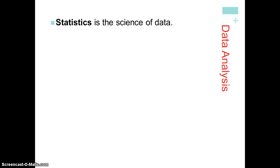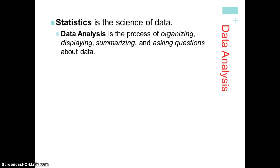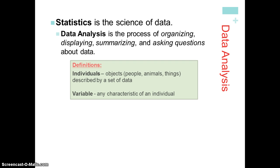Statistics is the science of data, meaning we use numbers to study data. Data analysis is the process of organizing, displaying, summarizing, and asking questions about data. When we're looking at a set of data, we can describe it. We are going to use a variable to describe a characteristic about an individual. Individuals are the things — people, animals, or things — that are described by a set of data.